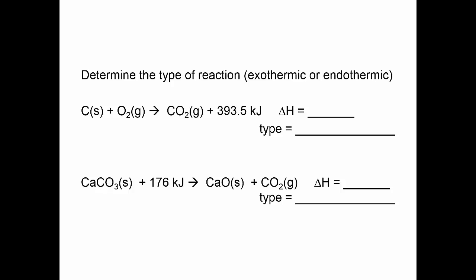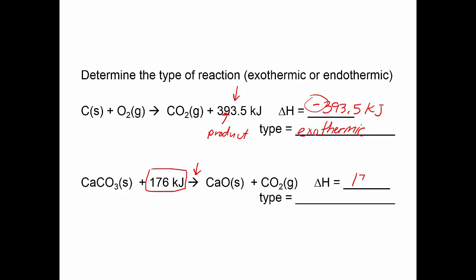I can give you a reaction and ask: is this endo or exo? Look at where the heat is. The heat is on the right side of the arrow, so the heat for this reaction would be negative 393.5 kilojoules — this is an exothermic reaction. How do I know? Negative, and it's a product. Both of those tell me the same thing. Now compare: look at where the heat is in this one — it's on the left side of the arrow, so you would say it's positive 176 kilojoules, and I know this is an endothermic reaction.